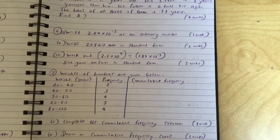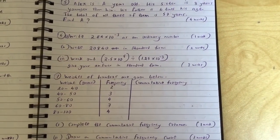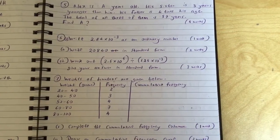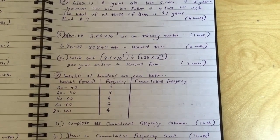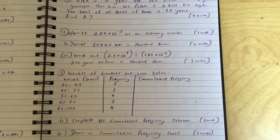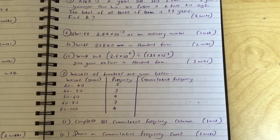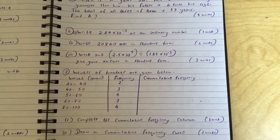Question 6: Write 2.84 times 10 to the minus 3 as an ordinary number. Part 2: Write 20,840 in standard form. Part 3: Work out 2.5 times 10 to the 5 divided by 1.25 times 10 to the minus 3. Give your answer in standard form.